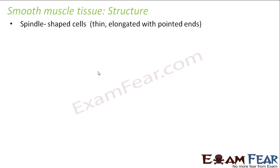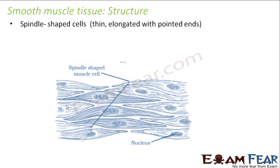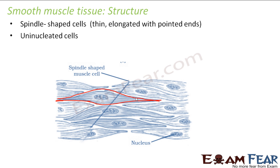Smooth muscles are also known as unstriated muscles because when observed under a microscope, the alternate dark and bright bands — the striations — are not seen at all. Now let us look at the structure of smooth muscle tissue. The cells are spindle shaped — elongated, but with thin and pointed ends at both sides. These are uninucleated cells, meaning each cell has one nucleus. These are two important structural differences between skeletal and smooth muscle tissue.